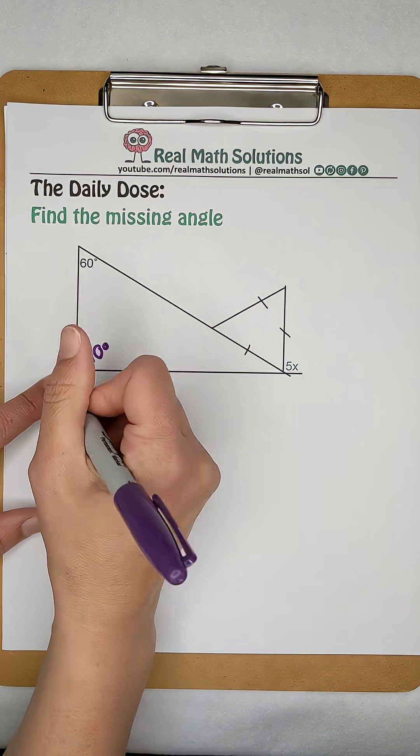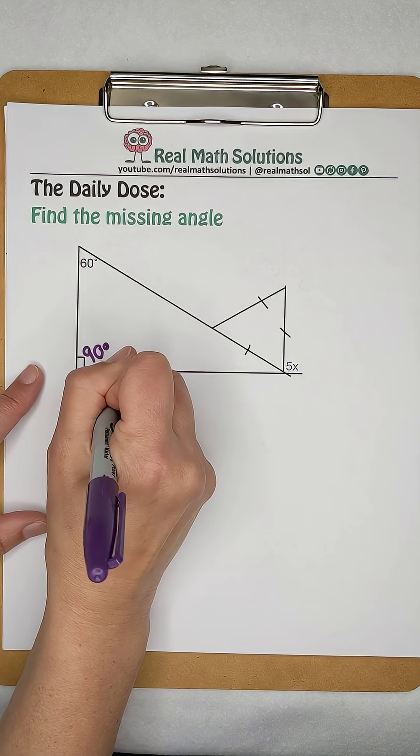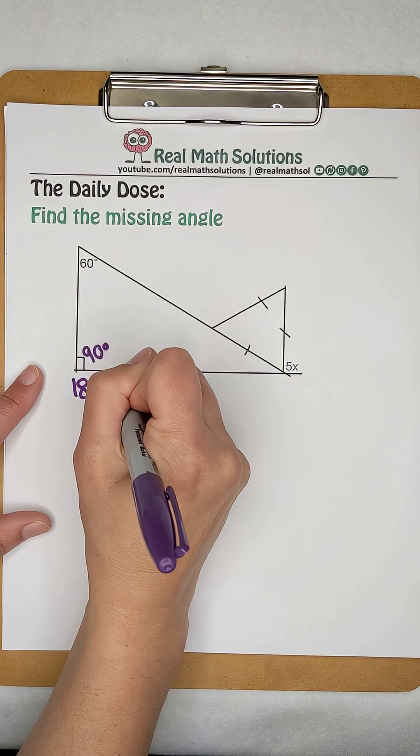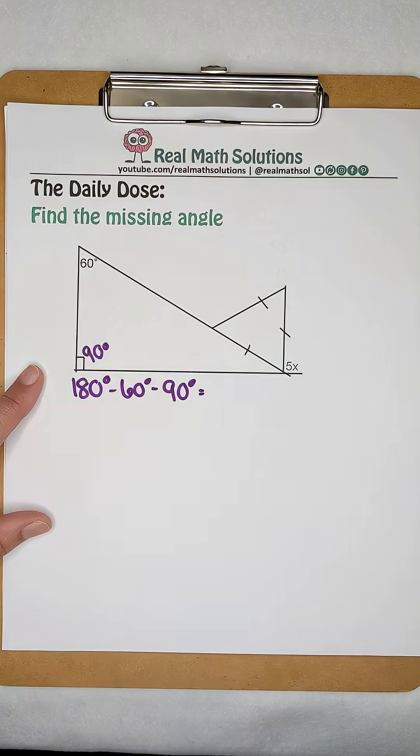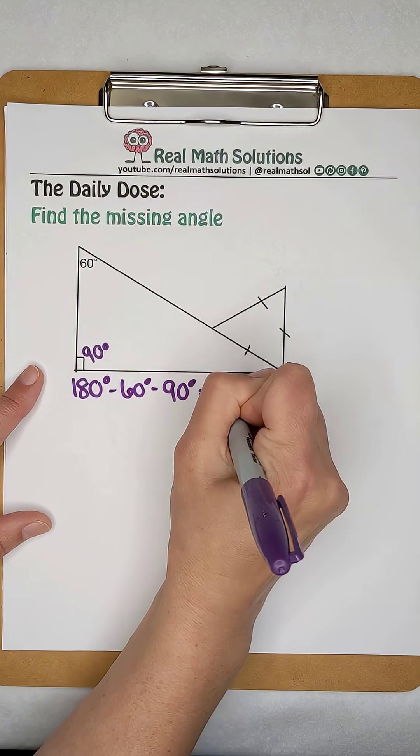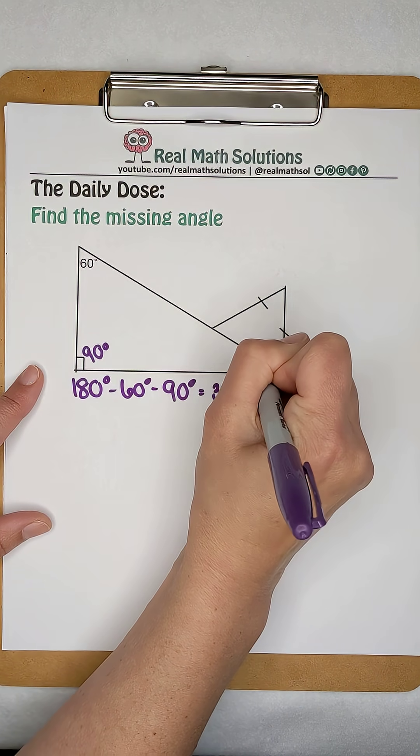We can use that to find our third angle because all triangles are worth 180 degrees total. So 180 minus the 60 and the 90 that we've already used leaves 30 degrees for the missing angle in this triangle.